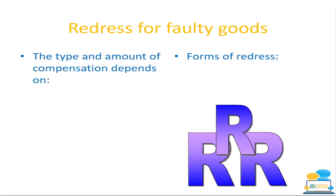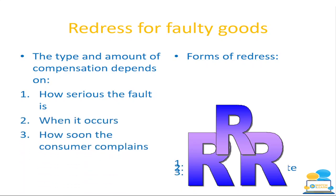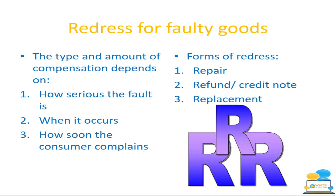Redress for faulty goods — the compensation depends on the type and seriousness of the fault, when it occurs, and how soon the consumer complains. The sooner you complain, the better — this is why you should keep your receipt. Forms of redress include a repair, a refund, a credit note, or a replacement. Generally, a refund is better than a credit note because a credit note is like money back on a card specific to that one shop, whereas a refund lets you spend your money anywhere.